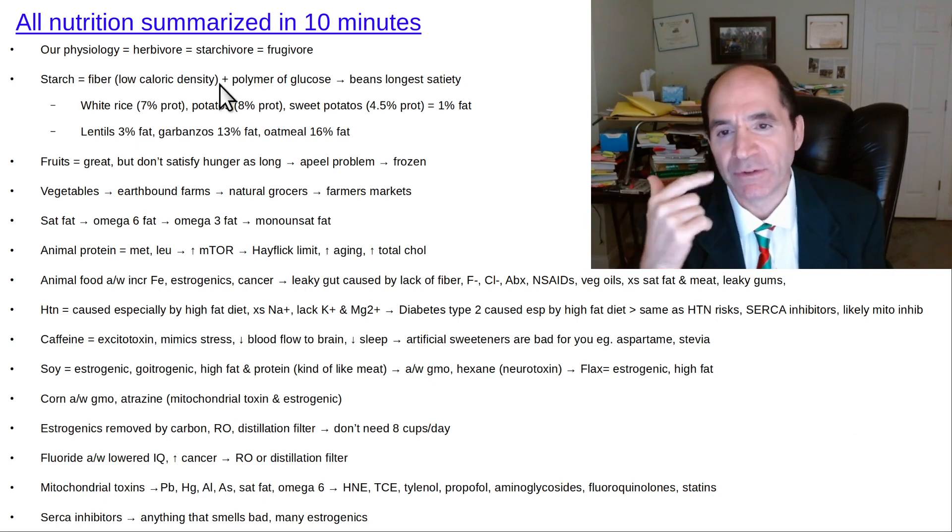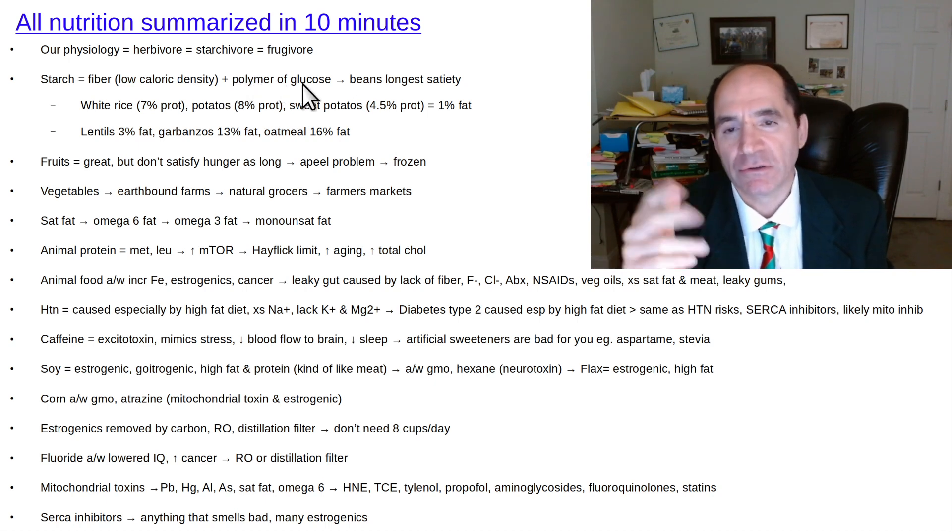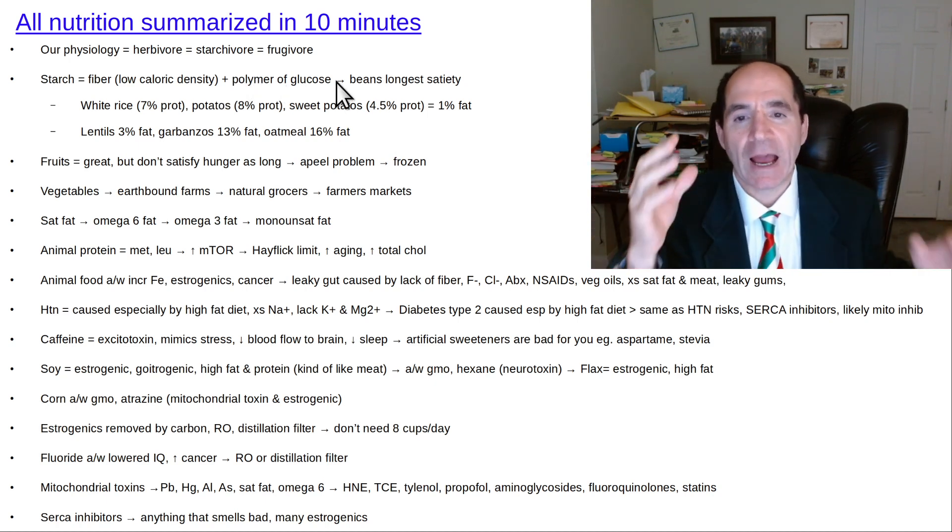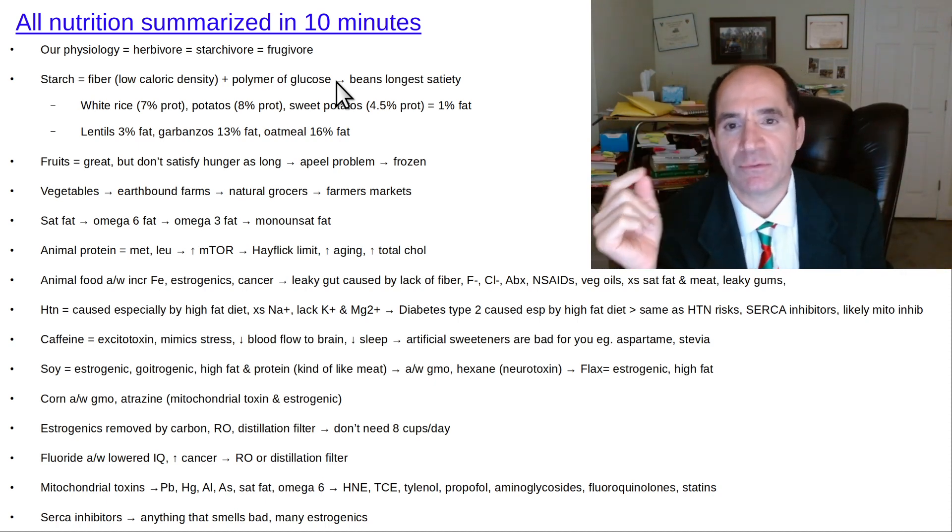Our physiology is like a herbivore. If you look at our teeth, they're flat like a horse. Dr. McDougall's called us starchivore. Some have called us frugivore. We can eat both. Some people think we started out with color vision so we could recognize when fruits were ripe, and that might be correct.